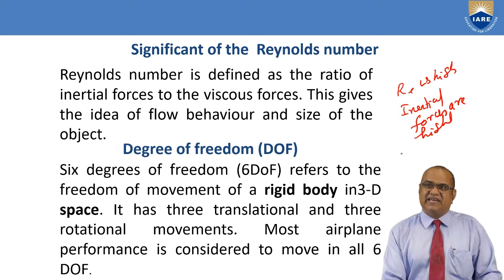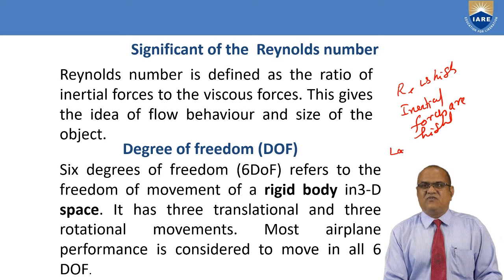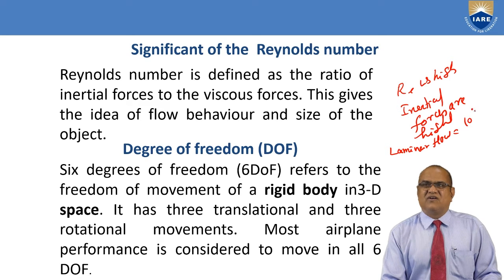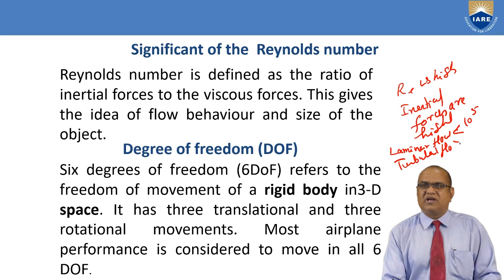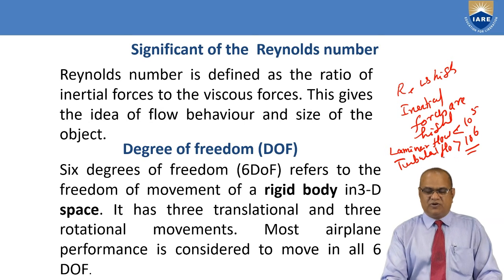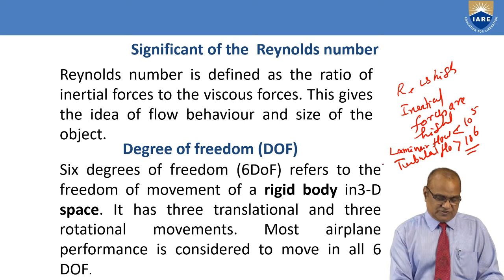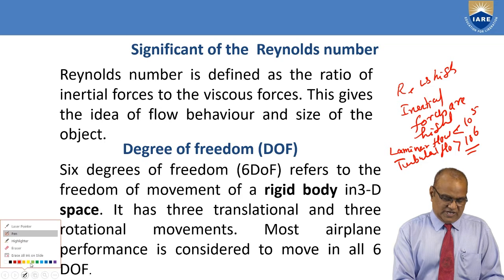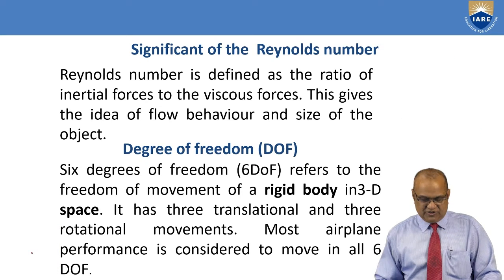In aircraft, laminar flow occurs when Re is less than 10^5, and turbulent flow when Re is greater than 10^6. This Reynolds number value helps determine and reduce unfavorable flow conditions.